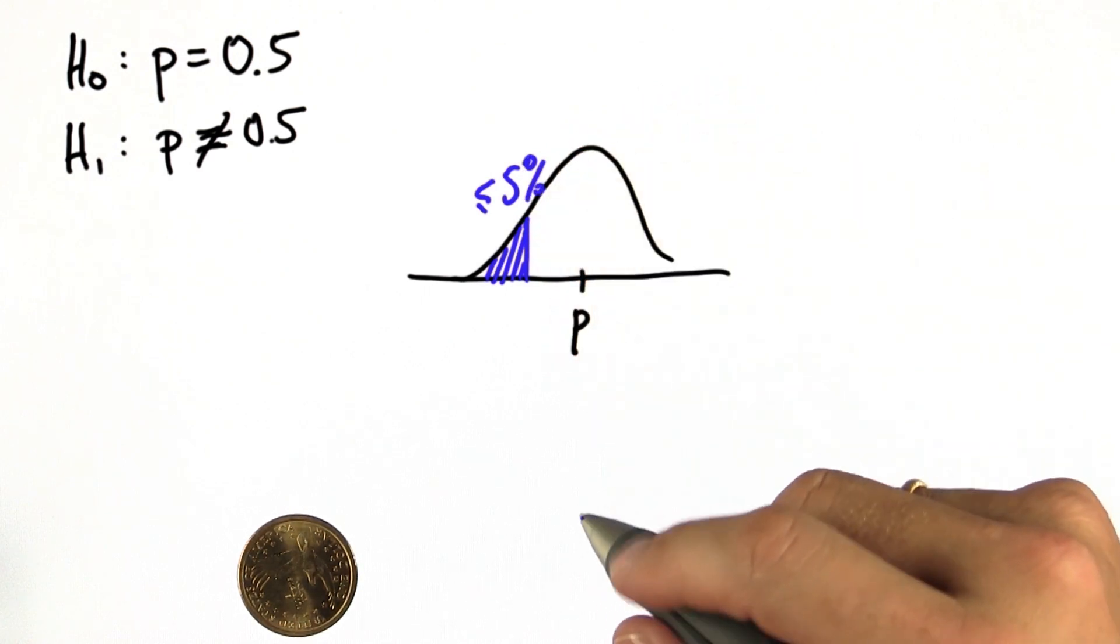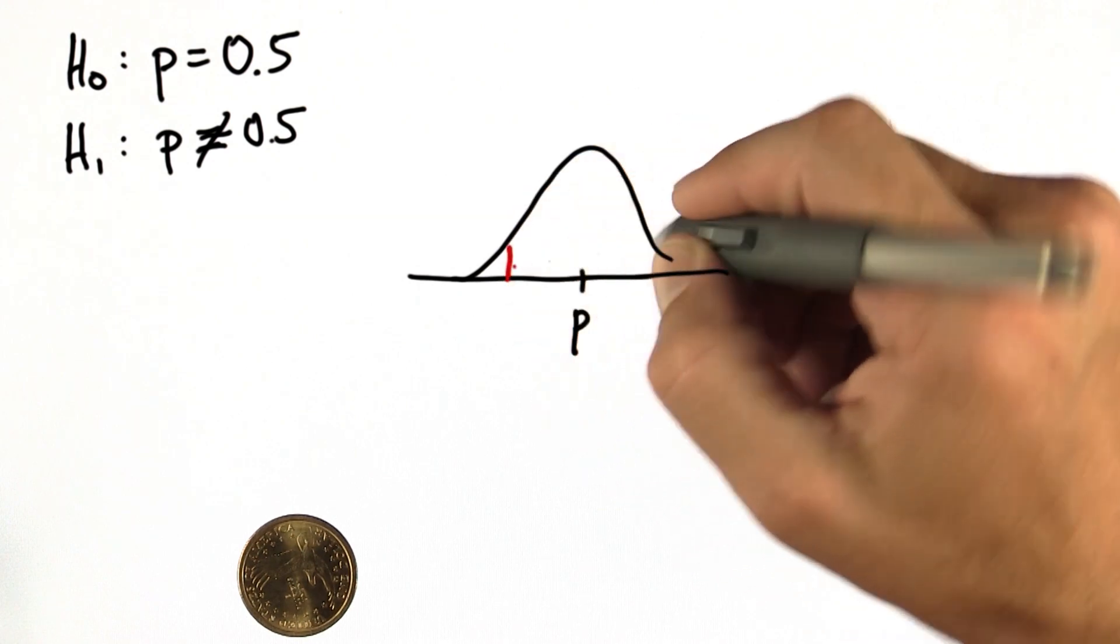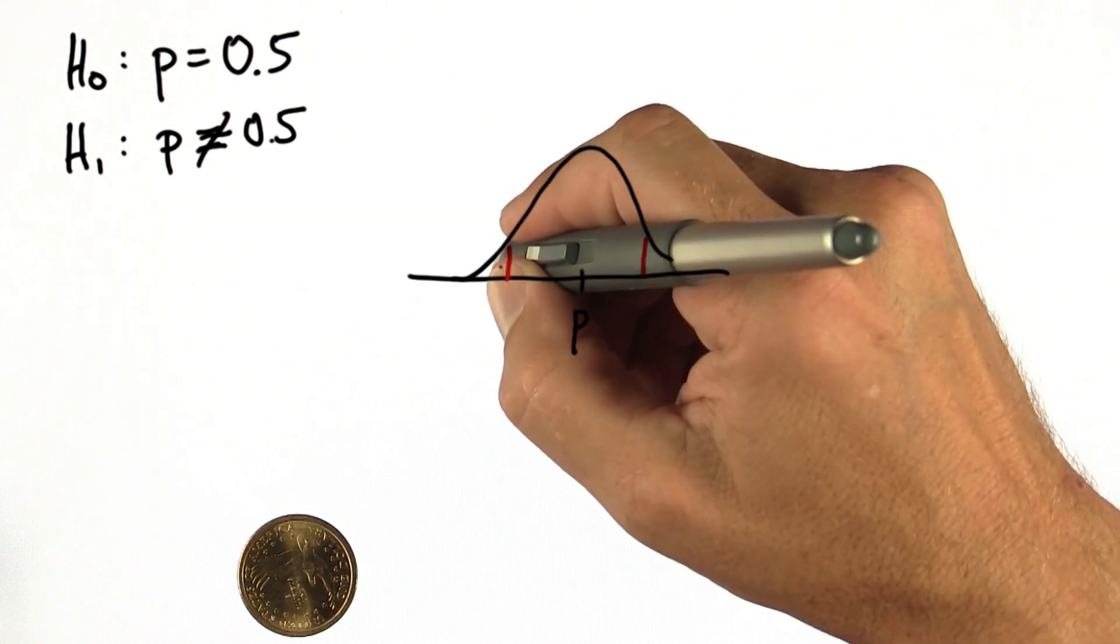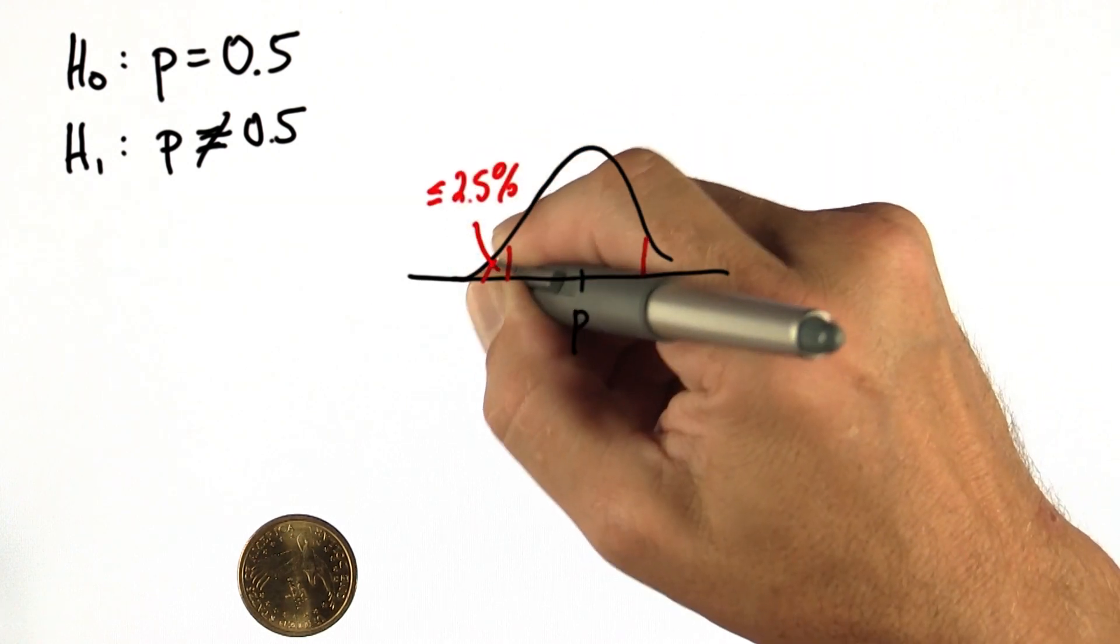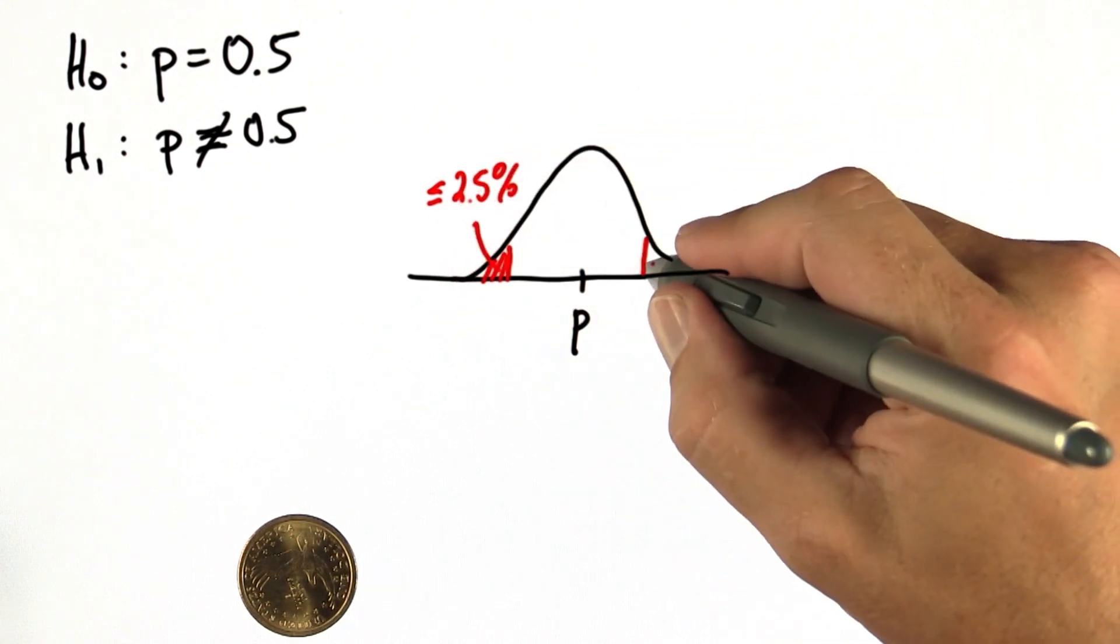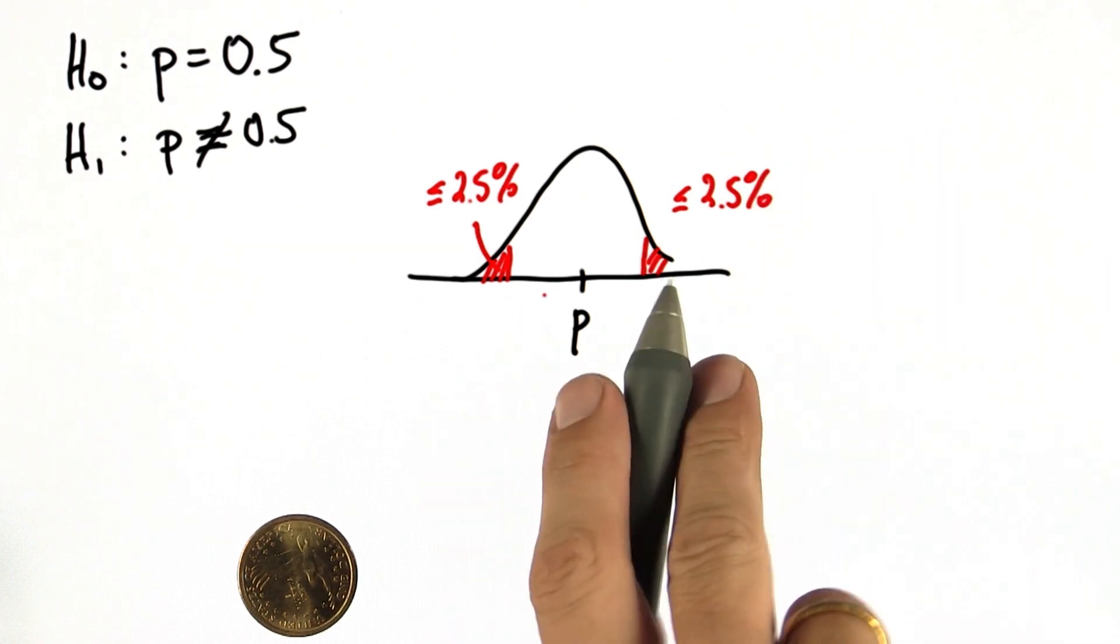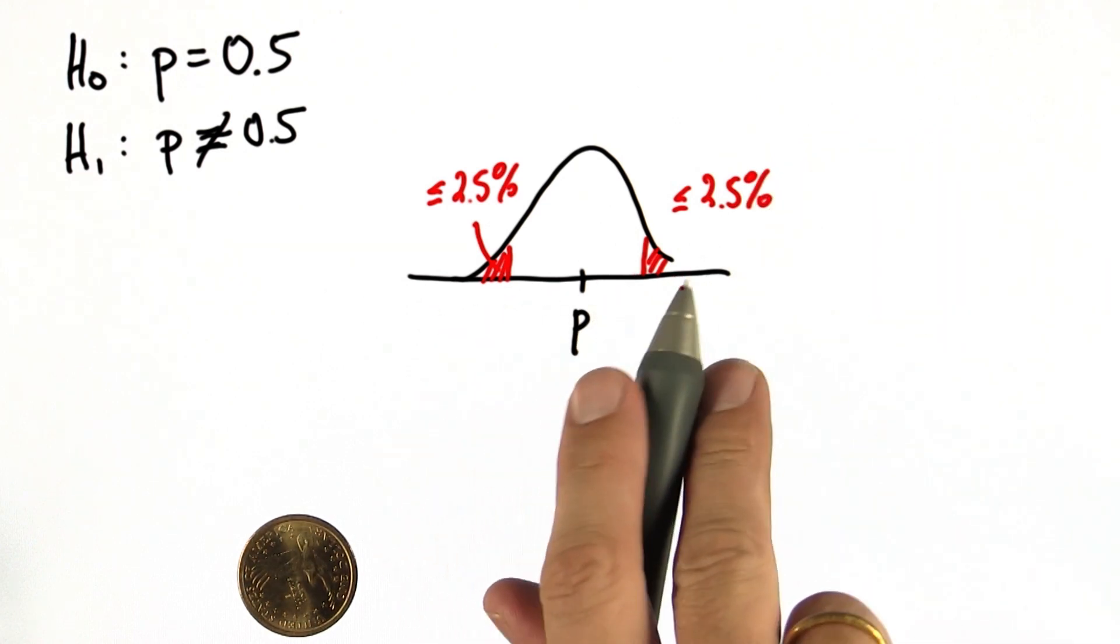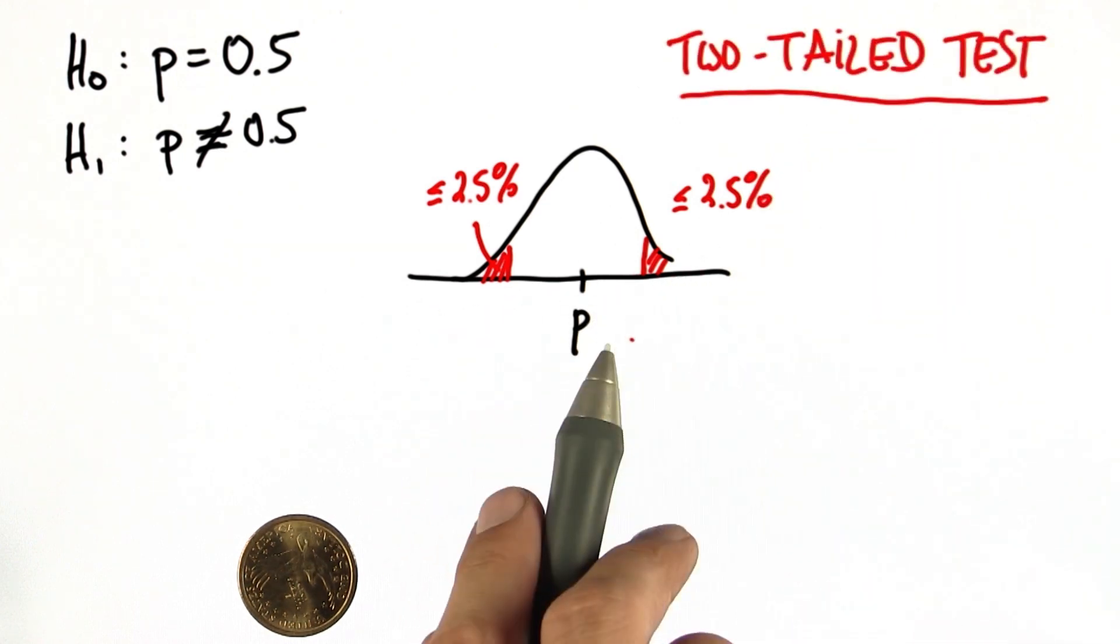Now, in the two-sided test, what we'll do is carve out a smaller region on the left, but also one on the right, such that the area on the left doesn't exceed half of 5%, which is 2.5%, and the same for the area on the right. So now we've moved the critical region into two areas. We have a two-sided test now.